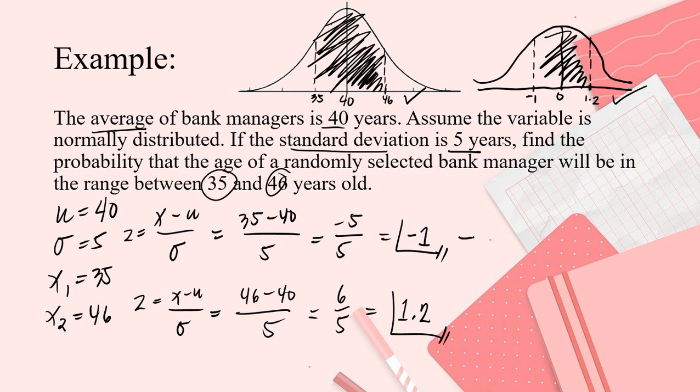So, let's get the equivalent in our table. What is the equivalent of 1 again? You saw that earlier. We got it. So, the equivalent is 0.3413. The equivalent of 1.2 is 0.3849. You know how to get it. So, from 35 to the mean, that is 0.3413. From 40 to 46, that is 0.3849.